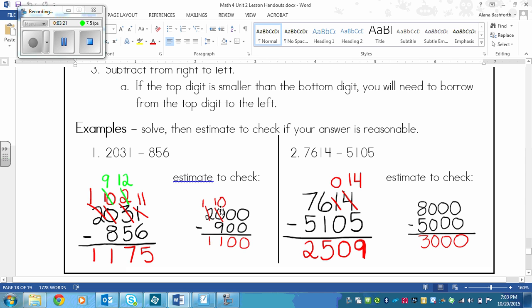And then to estimate to check, we round. So I rounded here to the nearest 2,000 here. We've got a two here. And the zero is four or less. So we let the two rest. And then we've got 900 here, because we had an eight. And then five is right next door. Five is five or more. So it bumps the eight up and raises the score to a nine.